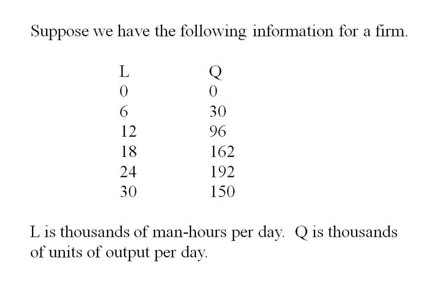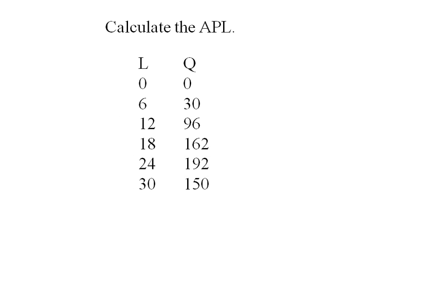Here's the same production function we looked at in the last screencast. Now let's calculate the average product of labor. The formula is the total output divided by the total input, in this case the quantity of labor.